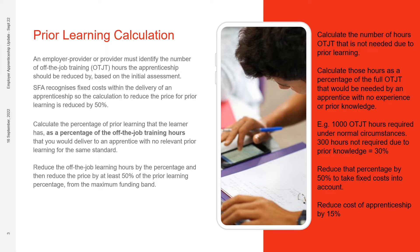Once you have carried out the initial assessment, the employer provider or provider must identify the number of off-the-job training hours the apprenticeship should be reduced by, based on that initial assessment. The ESFA recognises fixed costs within the delivery of an apprenticeship, so the calculation to reduce the price for prior learning is reduced by 50%.